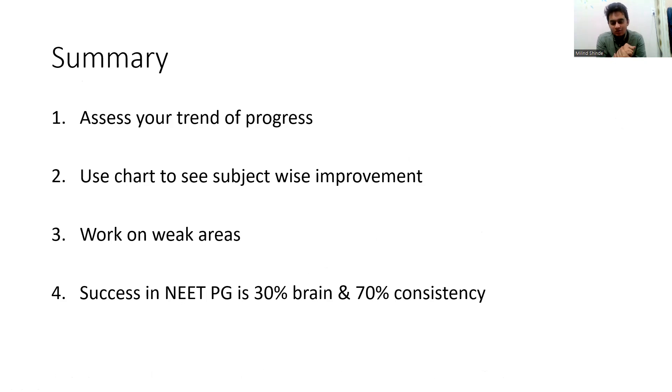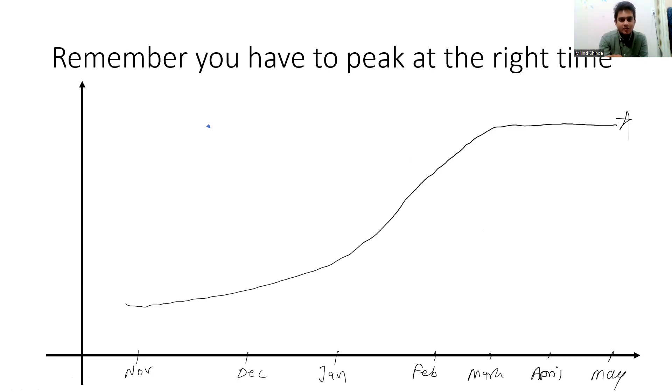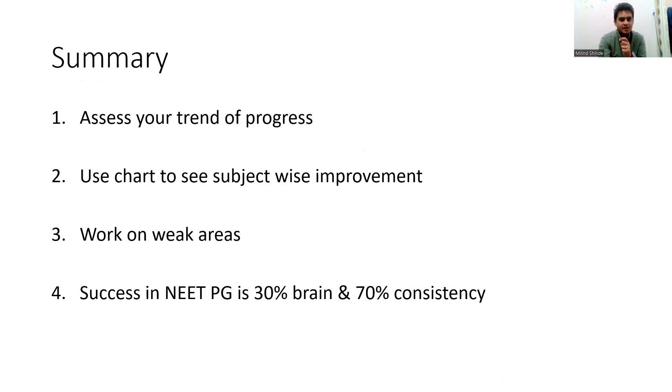So I just want to summarize whatever I told you. Assess your trend of progress. Make this chart and see how much you are progressing, write the total score in the end, and this will not take much time. So definitely you can do this to assess your trend. Use chart to see subject-wise improvement, which I already showed. Work on your weak areas. Don't run behind MCQs. See which subjects—if your rank building subjects are poor, spend more time on that. Don't, I'm telling you, giving more and more GTs is not going to improve your score. It just gives you false hope. And lastly, you know, this is my personal opinion, what I say: success in NEET PG is 30% brain and 70% consistency. Maybe a lot of students will not agree with me, but what I mean here is you don't have to use your brain a lot in your NEET PG exam. You have to be consistent. You have to read again and again. You have to be determined, and you have to show that consistency in your preparation. And then only you will remember more and you will produce a better result.